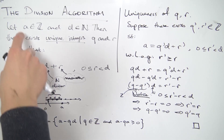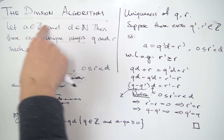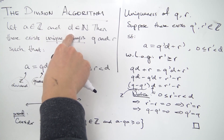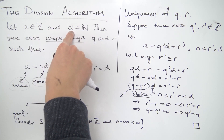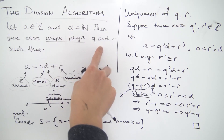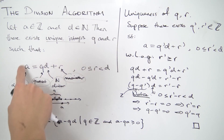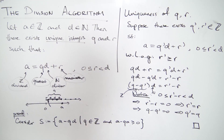That finishes the proof of the division algorithm. We showed that for any integer A and any natural number D, there exist unique integers Q and R satisfying A equals QD plus R, with 0 ≤ R < D. That's all for this video — I hope you enjoyed and I'll see everyone in the next one.